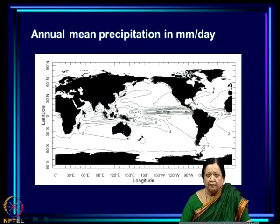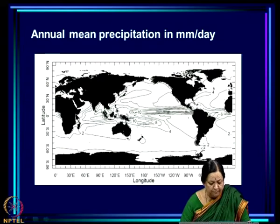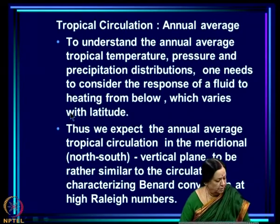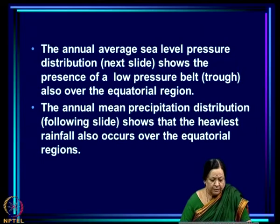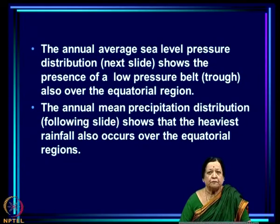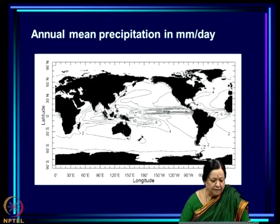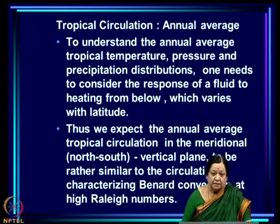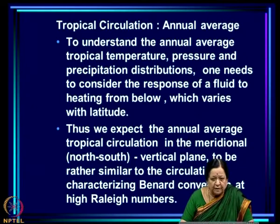The annual mean precipitation in millimeters per day is also maximum in the equatorial region — this is the rain belt in the annual average. The annual average sea level pressure distribution shows a low pressure belt or trough over the equatorial region, and the annual mean precipitation shows the heaviest rainfall occurs over the equatorial region. In the annual average, maximum temperature, a trough, and maximum rainfall all occur over the equatorial region.